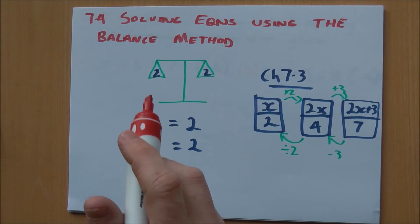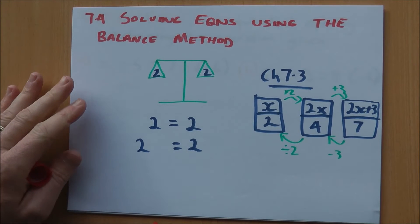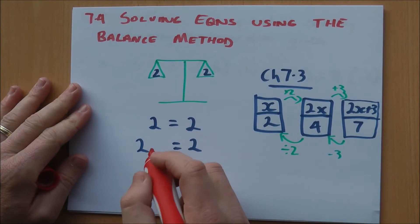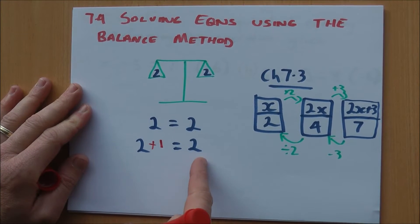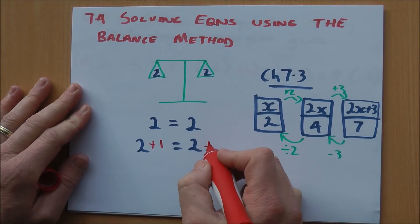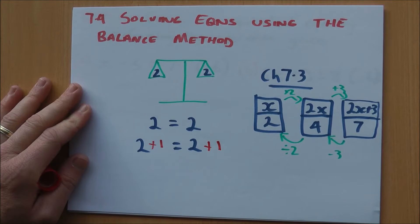Now if I change my scales or equation here by, for example, adding 1 to that side, you can see that they don't equal each other anymore. This is 3, this is still 2. To keep them equal or balanced, I must do the same thing to the other side.